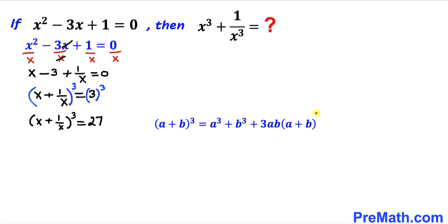And now let's recall this famous identity a plus b whole power 3 could be written as a power 3 plus b power 3 plus 3ab times a plus b.